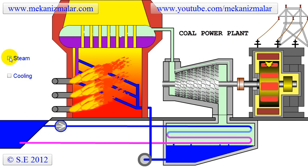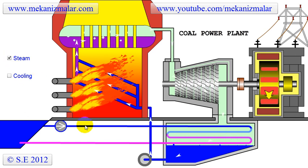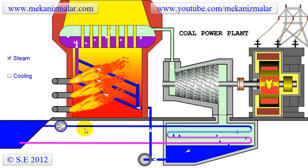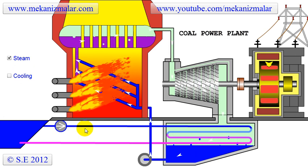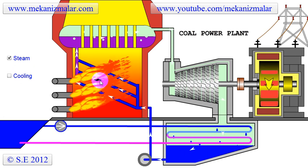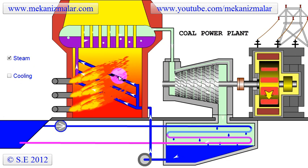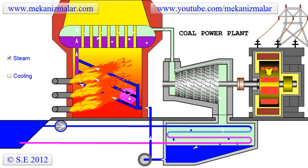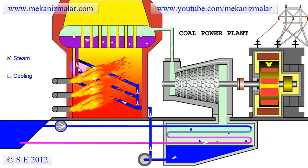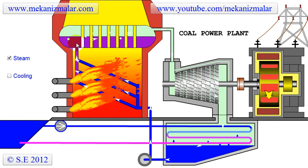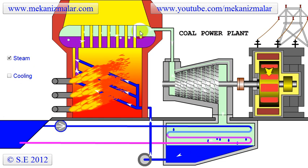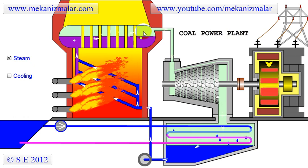Let's begin by describing the closed loop power cycle, or the steam cycle, starting from the furnace. Intense heat inside the furnace heats the water within the coils, which is coming from the condenser. This heated water is forced to the boiler where it evaporates. The pressure inside the boiler can be more than 200 bars.